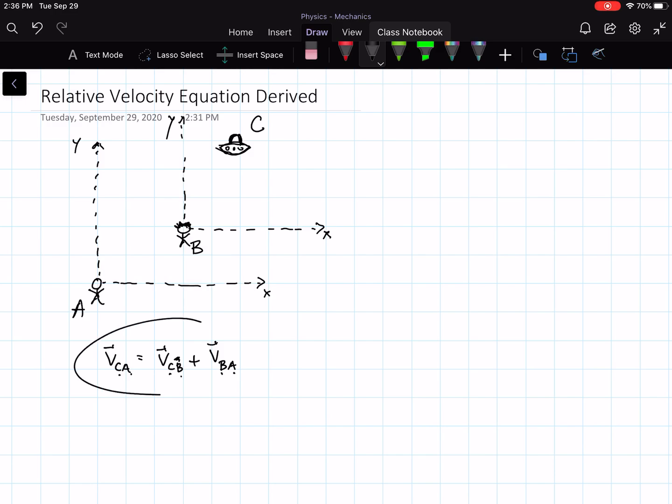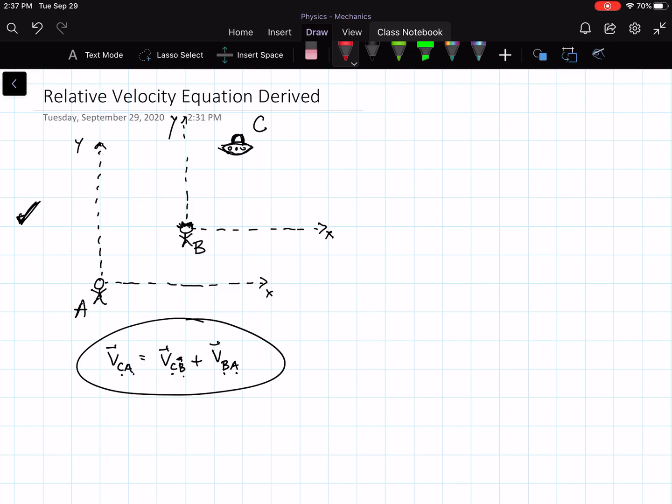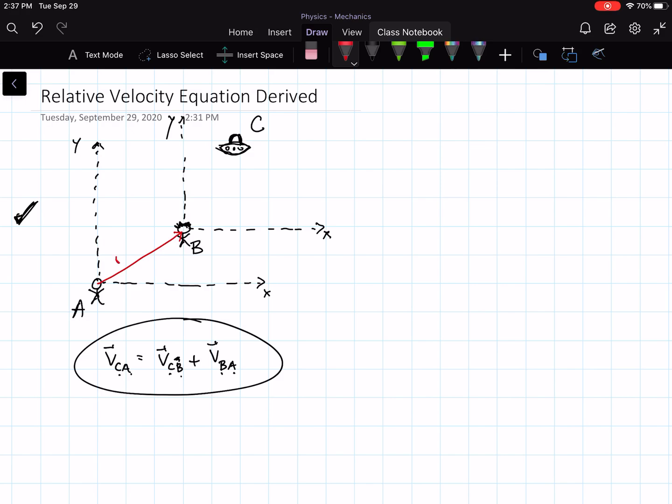Now, as far as where this equation comes from, we can get that just by taking a snapshot like we have here in time, where the two observers of the spacecraft, A and B, are separated from each other by some distance, right? So the position of B relative to A, right? So that'd be a vector, because it has a magnitude and direction.